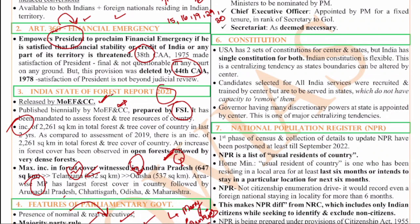In the USA, the center cannot infringe on the state, and the state cannot infringe on the center. But in India it is different. Be it the appointment of governor, be it the UPSC, be it the emergency - all these are centralizing tendencies where the central government gets more power. Why have we chosen such a unique blend? Though the center wants to empower the states, at the same time the center has to have more control during tough times and emergencies so that it can keep the country united. That unique need is the main reason.